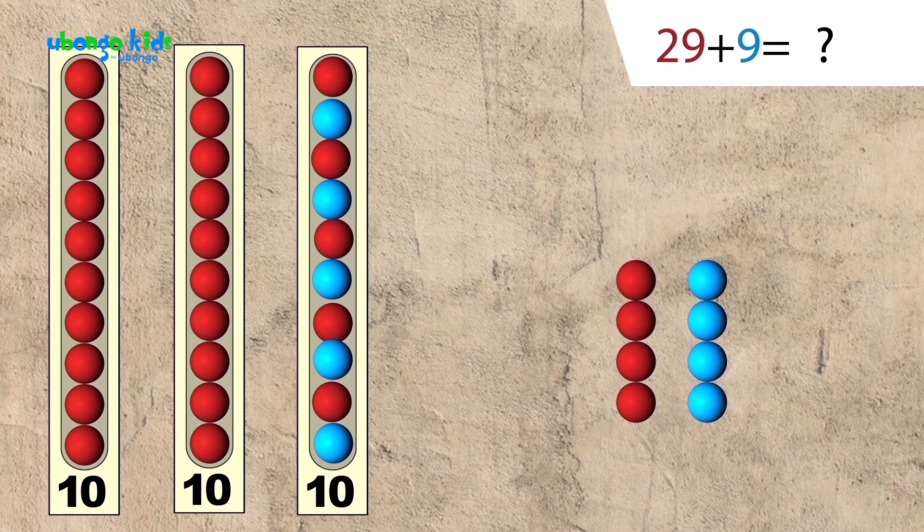Now, let's carry this over to join the other tens and see how many we have in total. Are you guys with me? You understand? It's simple, eh? So, we have ten, twenty, thirty.